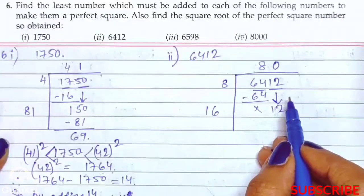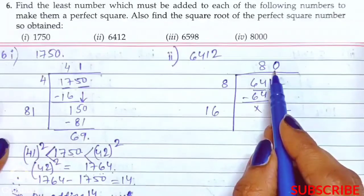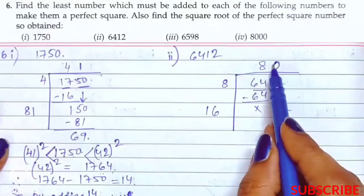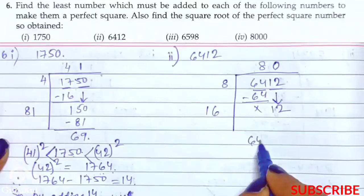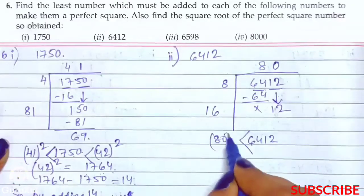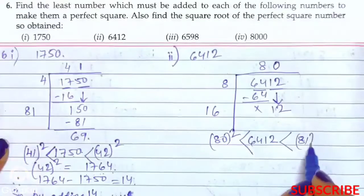Yeh toh normal division me bhi tha. Numbers which were not divisible, we used to write 0 in its place. To yaha pey bhi wahi chiz hai. To ab ham loog kya kareenge? 6412 is more than 80 square but it is less than 81 square.